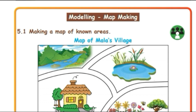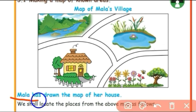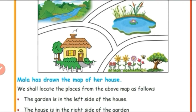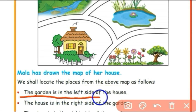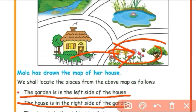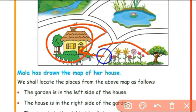See this map. This is a map of Mala. Mala has drawn the map of her house. We shall locate the places from the above map as follows. The garden is on the left side of the house. The house is on the right side of the garden.